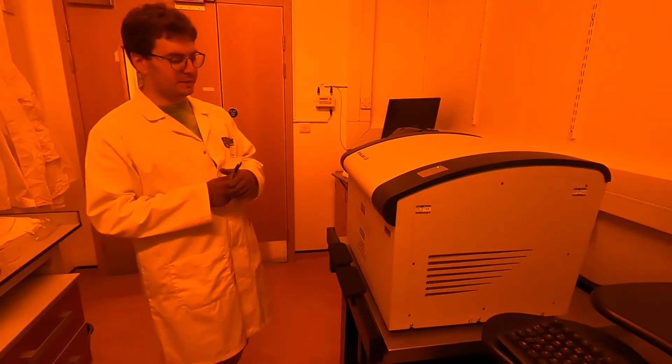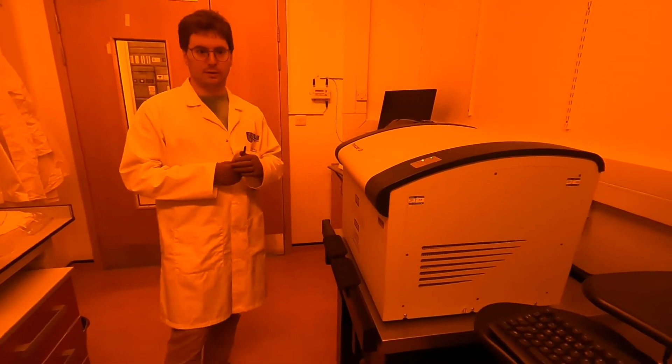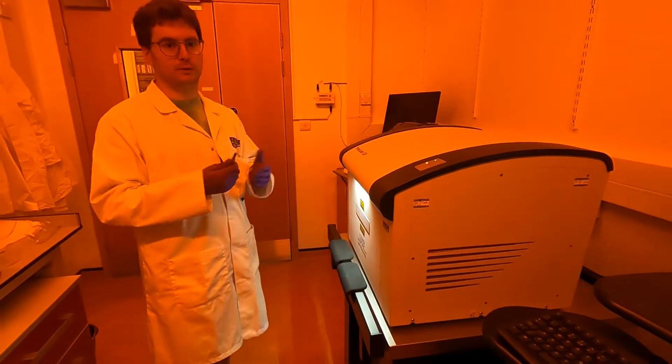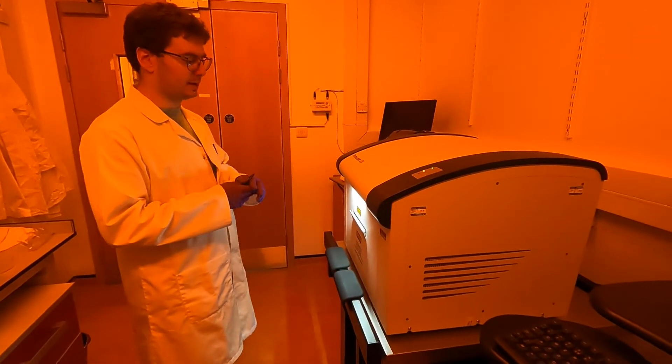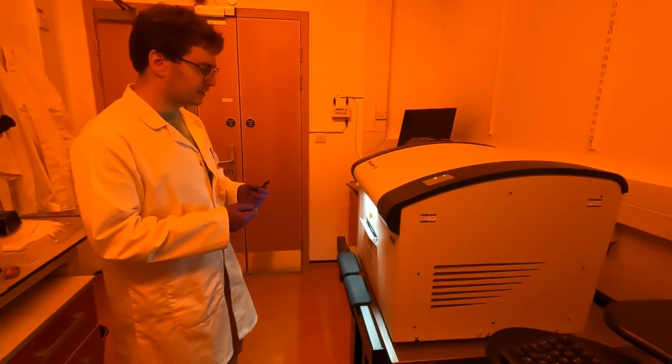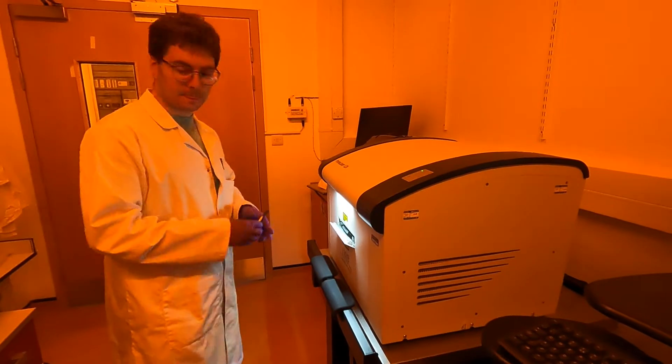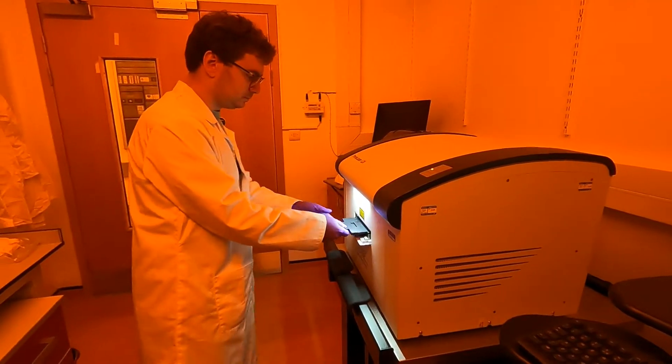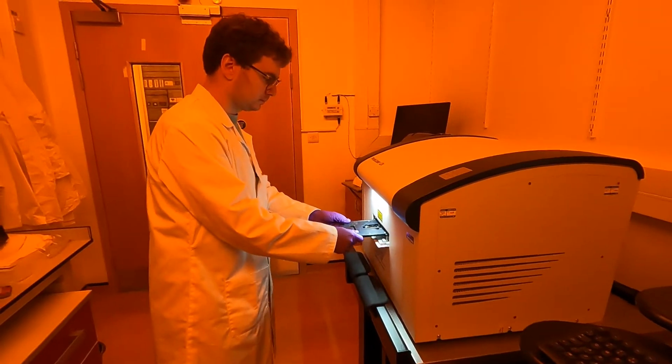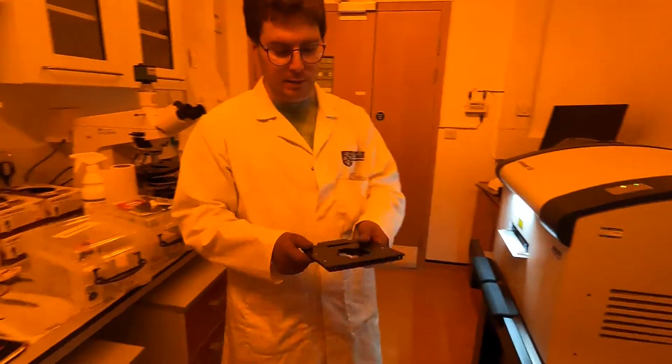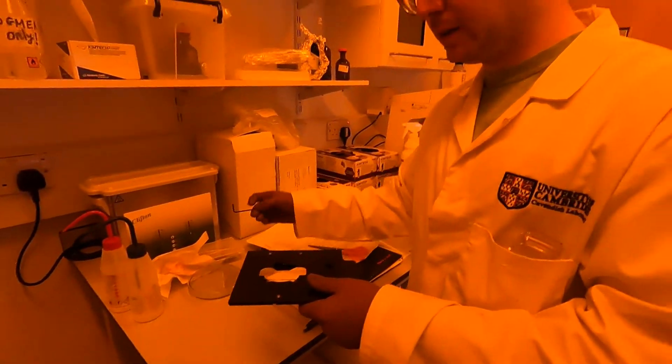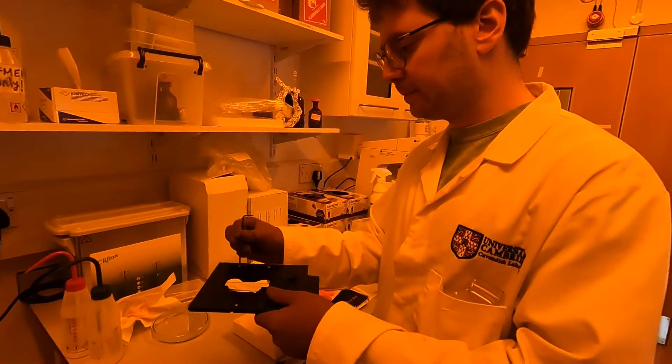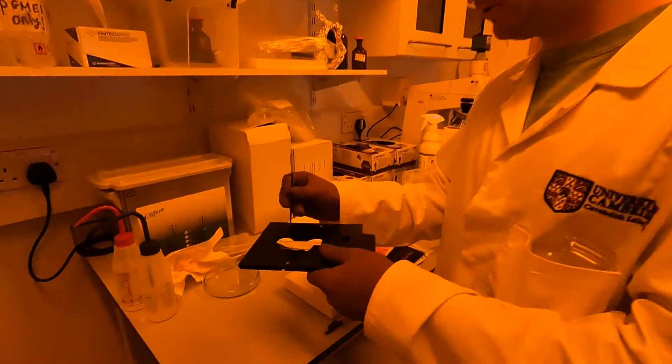The following step after this will be to take it out to develop. We will undo the screws and move on to the post-exposure bake step. The sample is now ready and coming out. Remember that the film is on the bottom side facing the floor, so we need to flip it over. I'm going to undo the screws first.